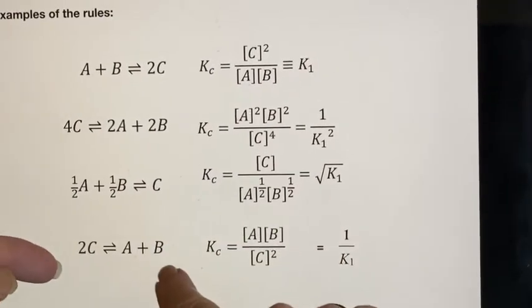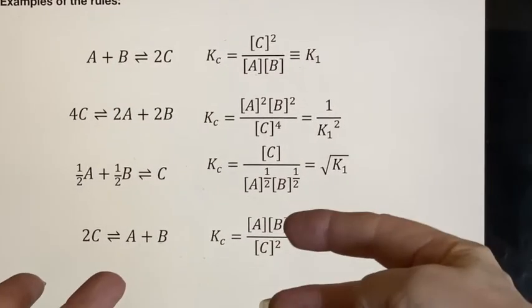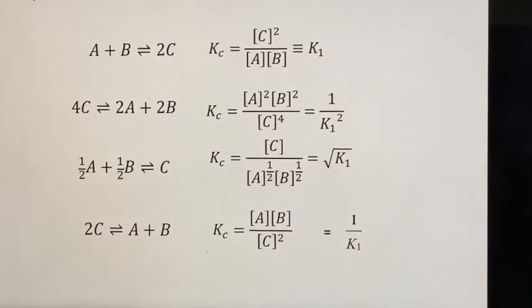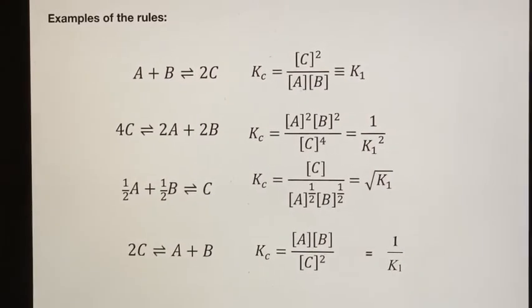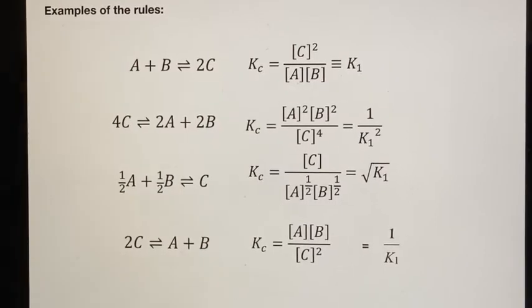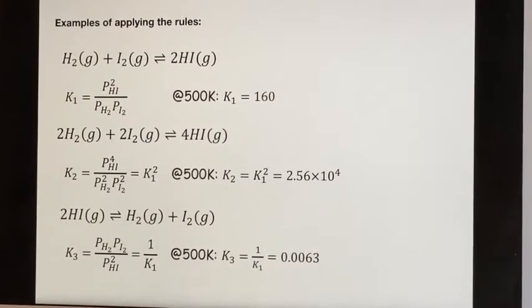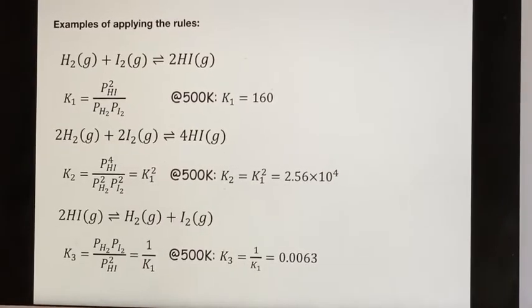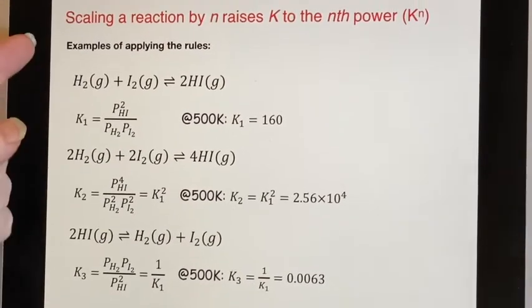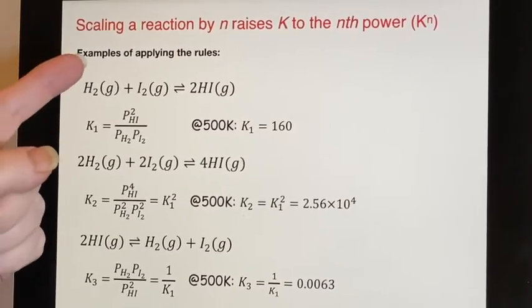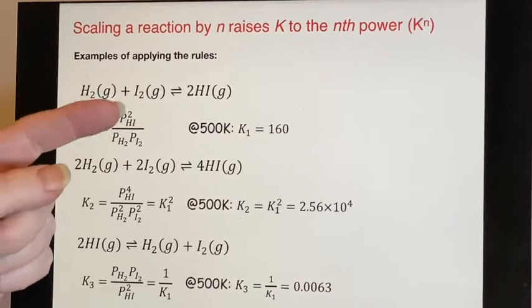And then this one has just simply been flipped. There it is, flipped. So it's just one over K one. Make yourself comfortable with each of those. You might want to do them in the opposite order to try to make yourself more comfortable with them. And here we have more examples of applying the rules, especially this one about scaling a reaction by n raises K to the nth power.